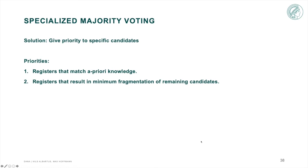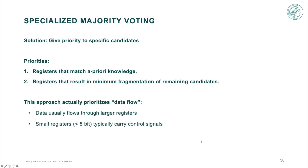Without going into much more detail, we implemented a specialized majority voting that considers both of these factors, which actually prioritizes data flow. Since data flows between bigger registers, we prioritize registers that prevent the creation of small registers, in this case under 8-bit, since they typically carry control signals. The exact details regarding the implementation can be found in the paper.